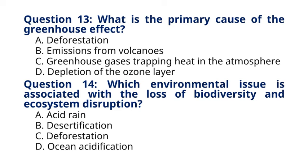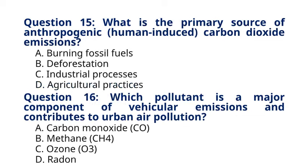Question 15. What is the primary source of anthropogenic, human-induced, carbon dioxide emissions? A. Burning fossil fuels. B. Deforestation. C. Industrial processes. D. Agricultural practices. The correct answer to question 15 is option A. Burning fossil fuels. Explanation: the burning of fossil fuels for energy production, transportation, and industrial processes is the primary source of anthropogenic carbon dioxide emissions contributing to climate change.